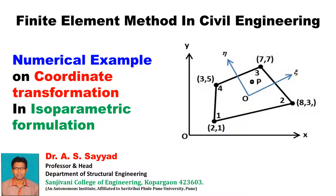In isoparametric formulation, since both the coordinate systems are involved — natural coordinate system as well as Cartesian coordinate system — many times we have to transfer the Cartesian coordinates into natural coordinates or natural coordinates into Cartesian coordinates. That's why you should understand how to transfer the coordinates from one coordinate system to another. We will discuss this with the help of one numerical example.